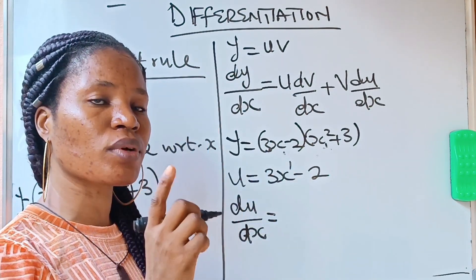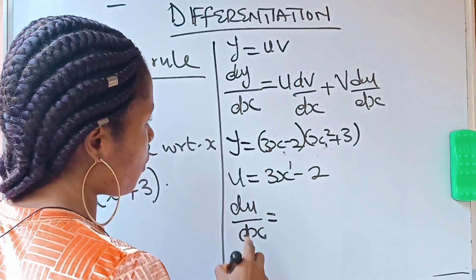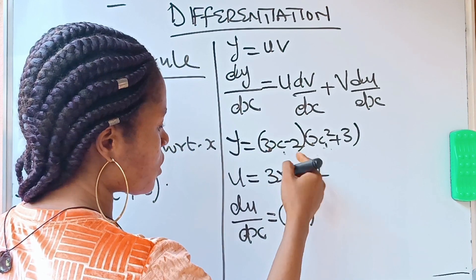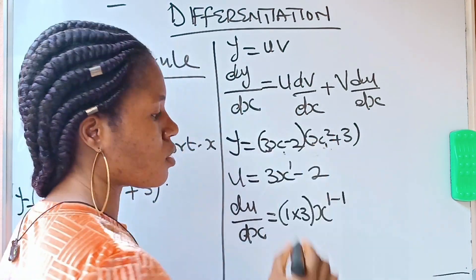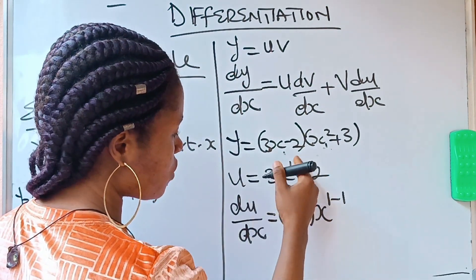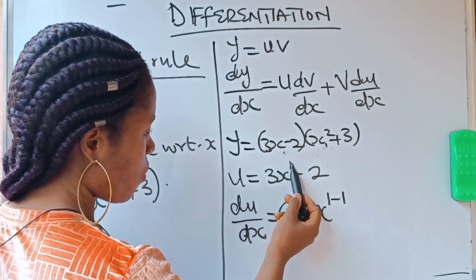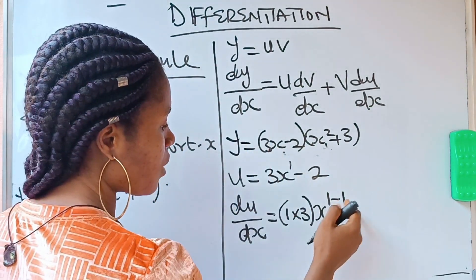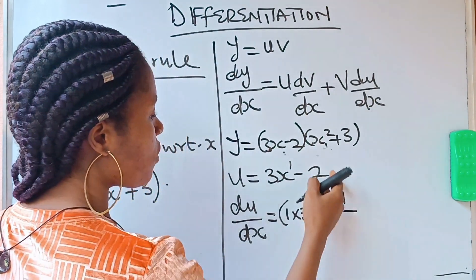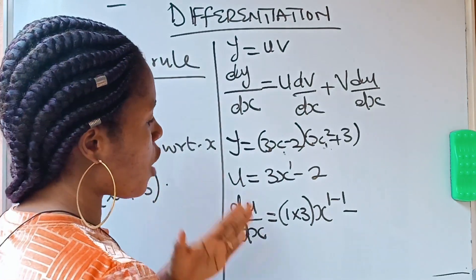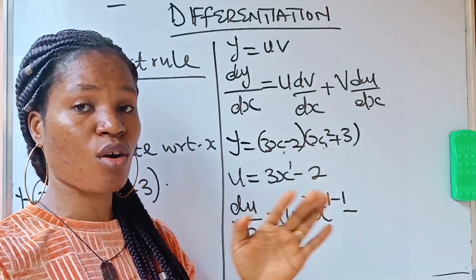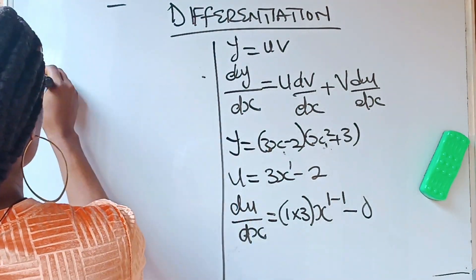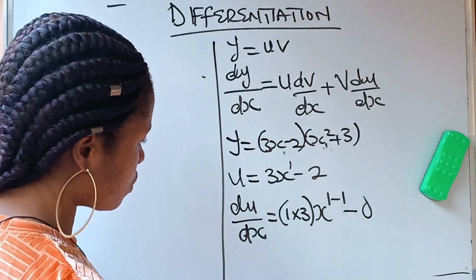How do you make use of it? du/dx is going to be: this 1 multiplies the 3, so you say 1 times 3, then write x raised to the power of 1 minus 1. That is how you differentiate 3x raised to the power of 1. When you differentiate a constant, the answer is 0. It has a proof, but when you are differentiating any constant, the answer is 0.